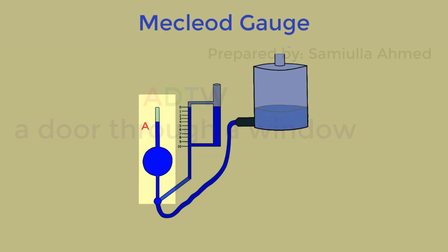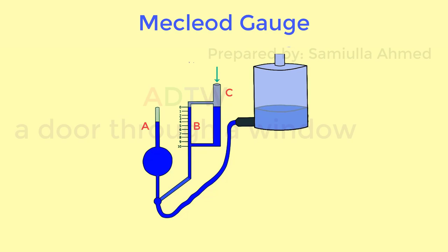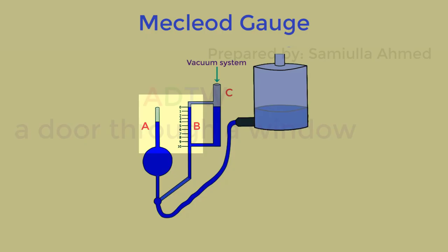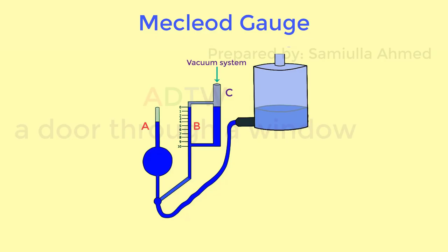McLeod pressure gauge is composed of a capillary tube A which is sealed at the top, and two limbs B and C which are connected to the vacuum system. Both limbs A and B are capillary tubes and their diameters are the same. The diameter of limb C is wider and hence reduces the capillary errors.